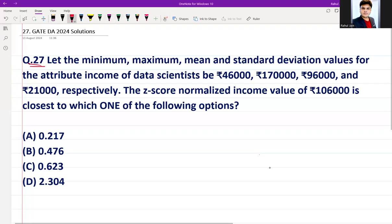Question number 27, GATE DA 2024 paper one in the morning session. The question is: Let the minimum, maximum, mean and standard deviation values for the attribute income of data scientists be ₹46,000, ₹1,70,000, ₹96,000 and ₹21,000 respectively. The z-score normalized income value of ₹1,06,000 is closest to which one of the following options?